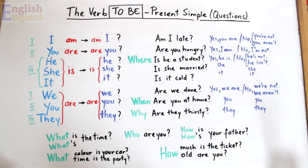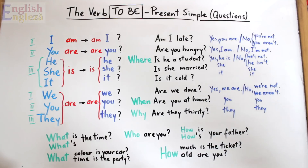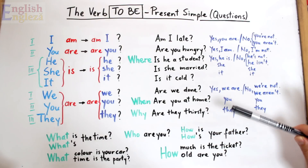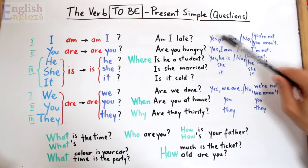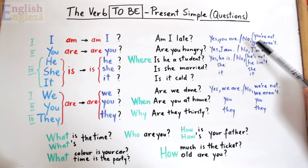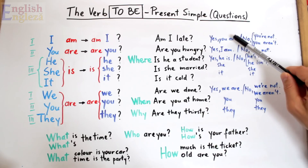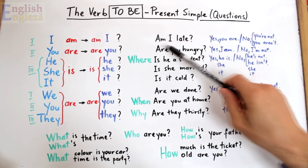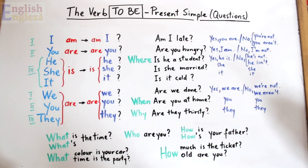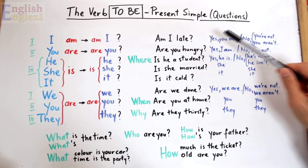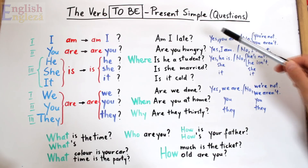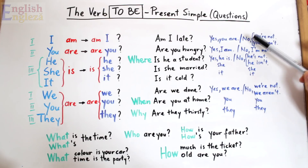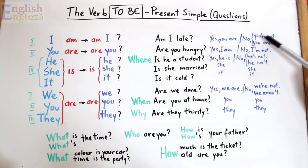La astfel de întrebări cu verbul to be, a fi, putem răspunde cu așa numitele short answers, răspunsuri scurte. Aceste întrebări fiind întrebări închise, așa numitele closed questions, putem răspunde simplu cu yes sau no, da sau nu, plus un răspuns scurt folosind verbul to be. De exemplu, Am I late? — răspunsul poate fi yes, sau yes you are, da tu ești, în sensul tu ai întârziat. Sau negativul: no, și putem adăuga you are not sau you aren't, tu nu ești întârziat.